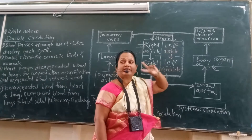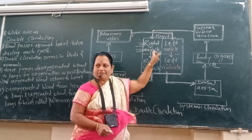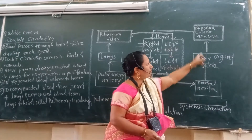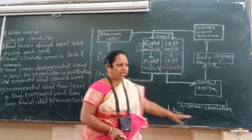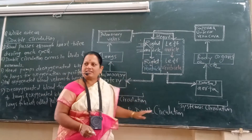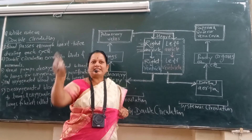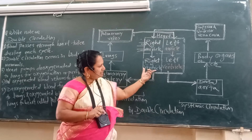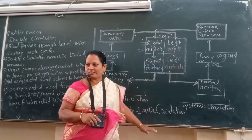Large veins collect this impure blood and it enters into the right auricle of the heart. So, from the heart to the body and from the body to the heart — that circuit is called systemic circulation. And from the heart to the lungs and from the lungs to the heart — that is called pulmonary circulation. Two circulations occur in a single cycle. The heart receives blood twice — impure and pure — therefore it is called double circulation.